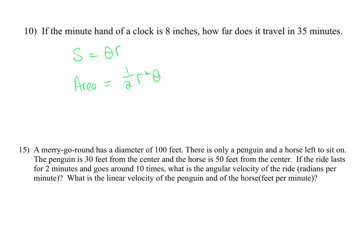For all of these it needs to be in radians. There is one where they give it to you and ask you to find theta in degrees, so you back into theta and convert. For example, if it traveled 35 minutes, you figure out what part of the circle you have: 35 out of 60 minutes. A full circle in radians is 2 pi, so that is your theta, then multiply by the radius 8. You should get 29.32.